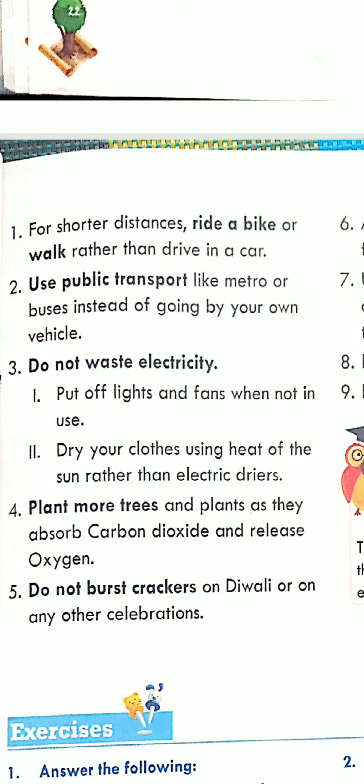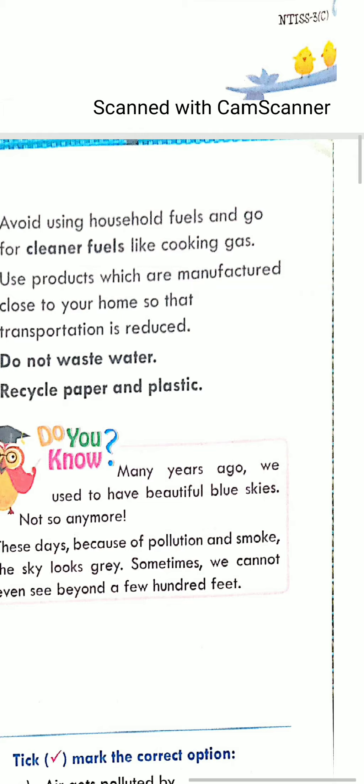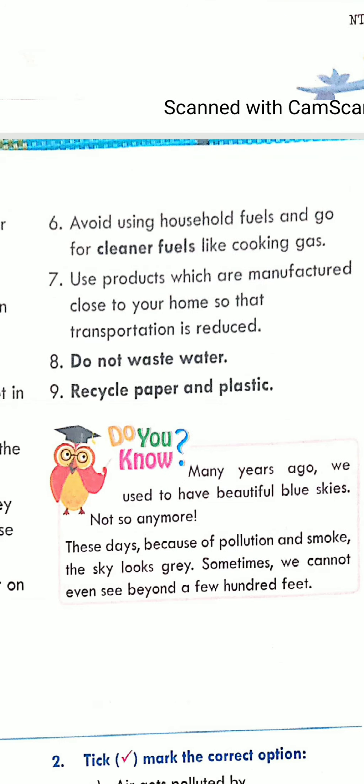Use cleaner household fuel, like cooking gas. Mostly in our houses we use cooking gas, but still in villages — and even in some cities — many people use coal, wood, or kerosene for cooking. All these things produce smoke and increase air pollution. So we need to stop doing this and switch to cleaner fuel like cooking gas.